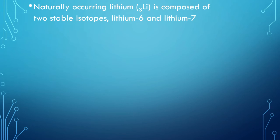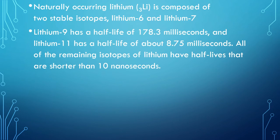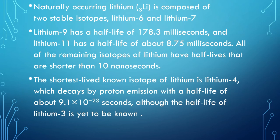Now we come to the last segment: isotopes. Naturally occurring lithium is composed of two stable isotopes: lithium-6 and lithium-7. All other isotopes are radioisotopes, of which lithium-9 has a half-life of 178.3 milliseconds and lithium-11 has a half-life of 8.75 milliseconds. All remaining isotopes of lithium have a half-life of less than 10 nanoseconds. The shortest-lived known isotope is lithium-4, which decays by proton emission with a half-life of 9.1 × 10⁻²³ seconds.